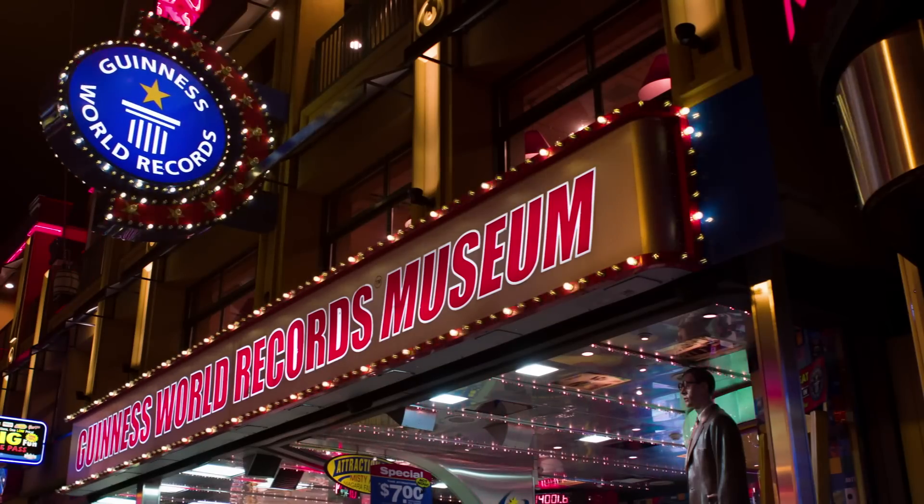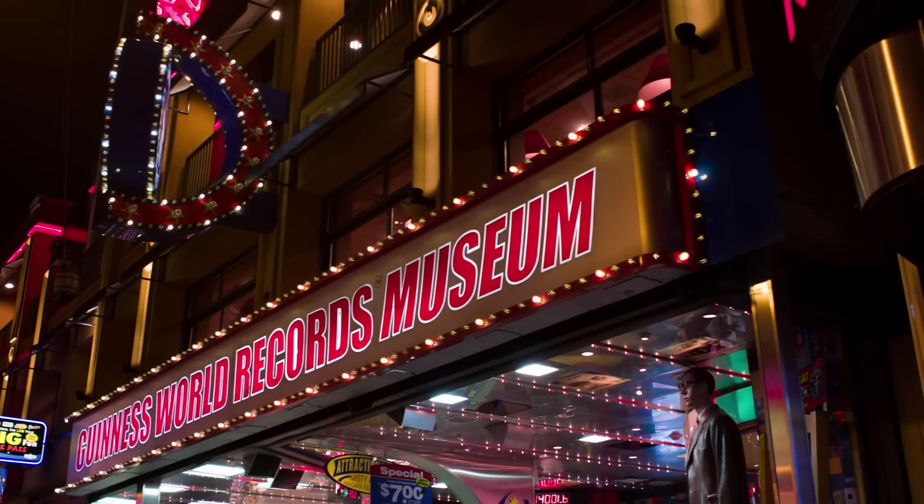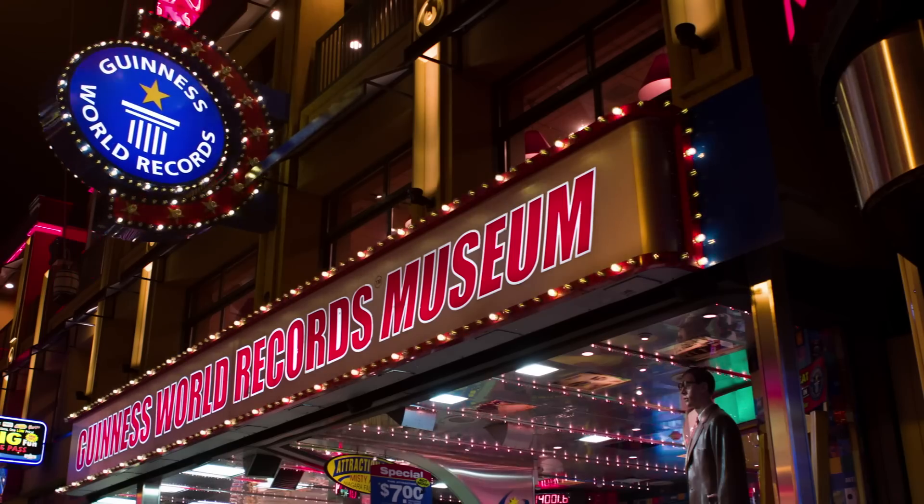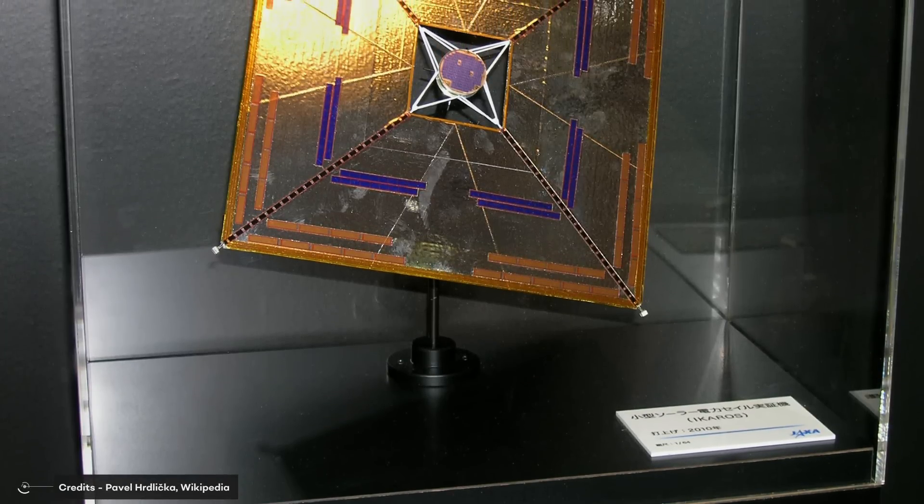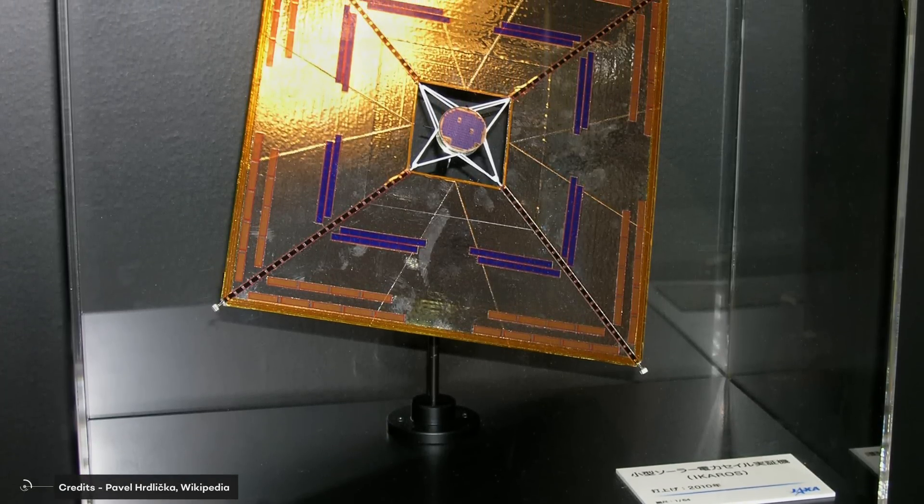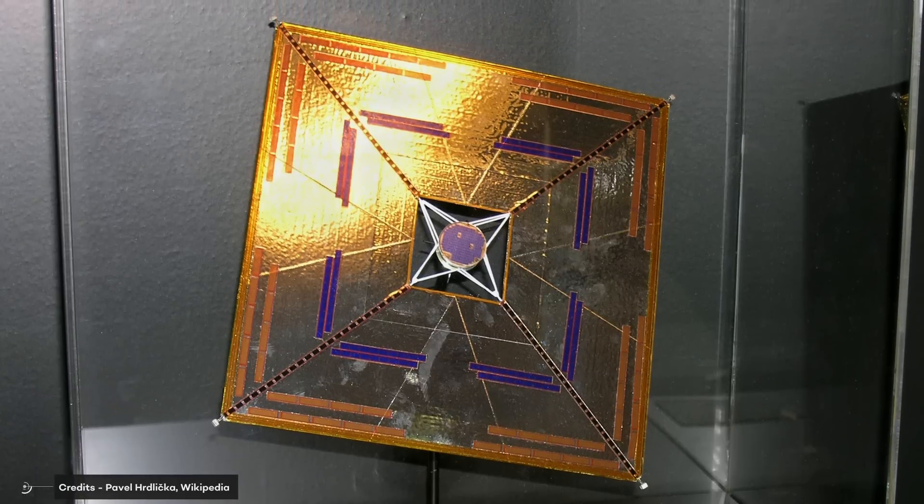On November 30, 2012, JAXA announced that IKAROS had been recognized by Guinness World Records as the first solar sail spacecraft between planets and that its two separated cameras, DCAM-1 and DCAM-2, had been recognized as the smallest size of the spacecraft flying between planets.